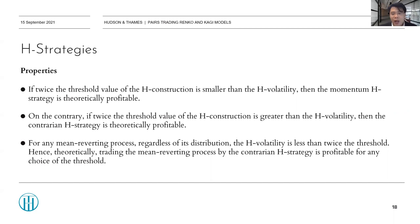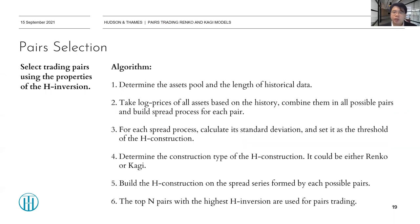The only remaining question is how do we find processes with mean reversion properties? The paper proposes the following algorithm: first, determine the asset pool and length of historical data; second, take the log price of all assets and combine them into all possible pairs, building a spread process for each pair; then calculate each spread's standard deviation and set it as the edge construction threshold; determine the construction type (Renko or KG); and finally, build the edge construction on each spread and select the top N pairs with the highest edge inversion for pairs trading.